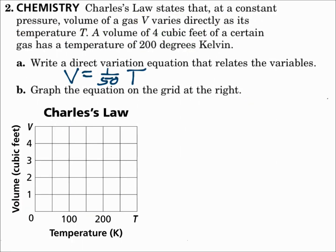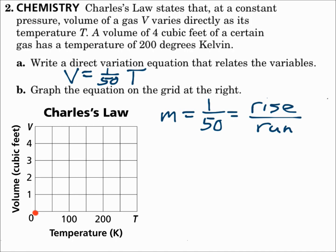Part b: graph the equation. Since it's direct variation, it goes through the origin, so the y-intercept is zero. Use k as the slope — k is 1 fiftieth, so the slope is 1 fiftieth. Rise over run: from the origin, rise 1, run 50, put a point. Rise 1, run 50, put a point. Keep doing that, get a few points, connect the dots, and there's your graph. Direct variation goes through the origin; use your slope to rise over run to the next point.